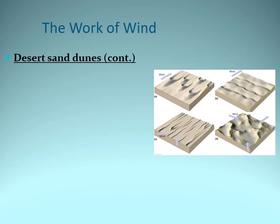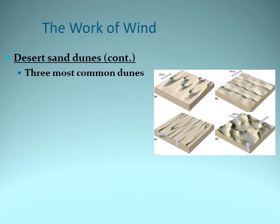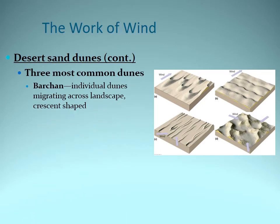Let's go over four types of sand dunes. The three most common sand dunes are: one, the barkan. The barkan is a crescent-shaped sand dune with horns that face downwind. We have to have enough sand but not too much sand to create these individual sand dune features, and we have to have one dominant wind direction.